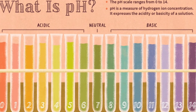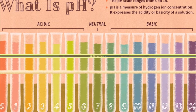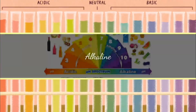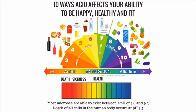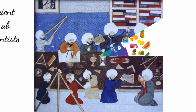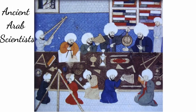An alternative term for basic is actually alkaline. This word came from the Arabic origin of alkali, and was used by ancient Arab chemists for a compound that happened to be very basic.